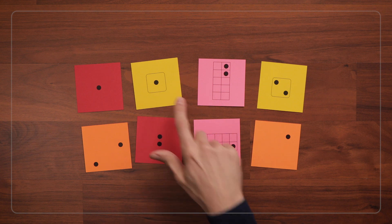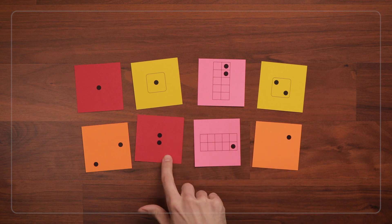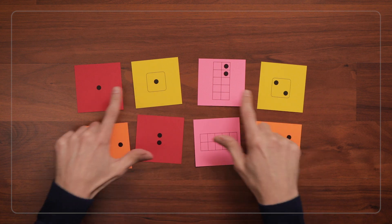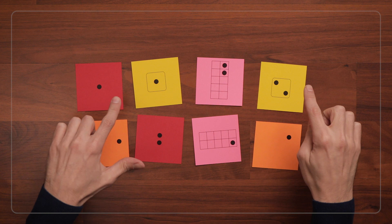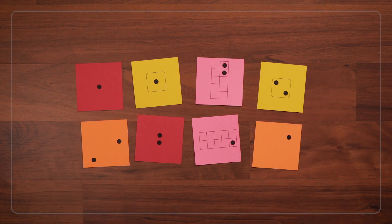Children may notice the card's attributes, such as their shape, their colors, and that they have different numbers of dots on them. The cards also have different dot configurations. These cards have a 10 frame, and these have a square that's kind of like what you find on dice.